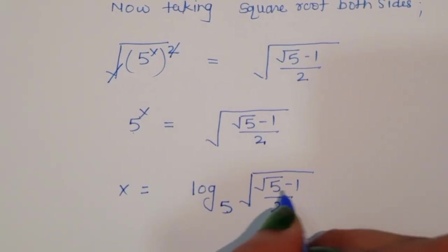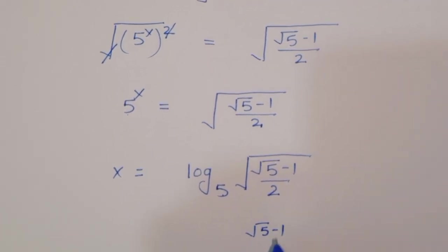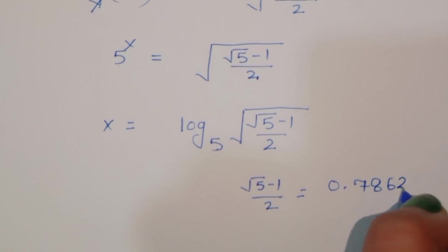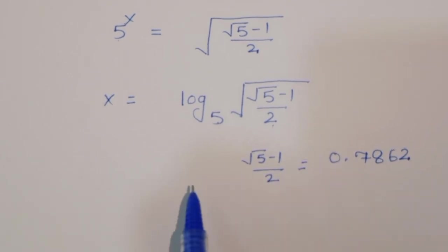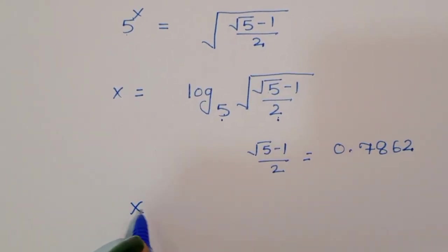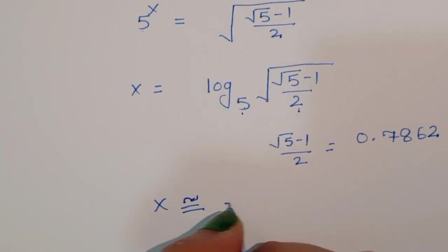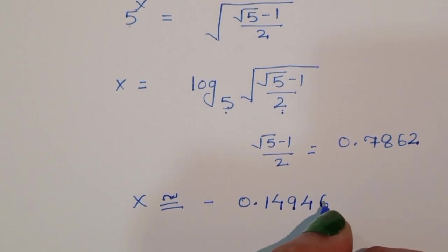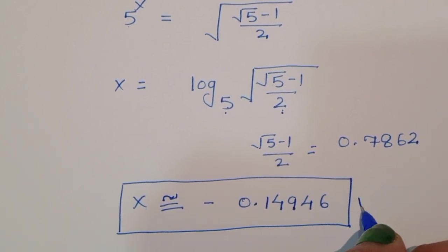The value of (√5 − 1)/2 is approximately 0.7862. Using a scientific calculator, x = log base 5 of √((√5 − 1)/2) is approximately x = −0.14946. This is the final value of x. Thank you.